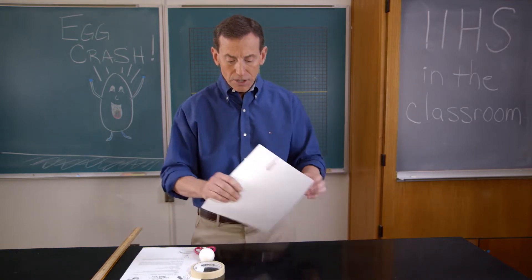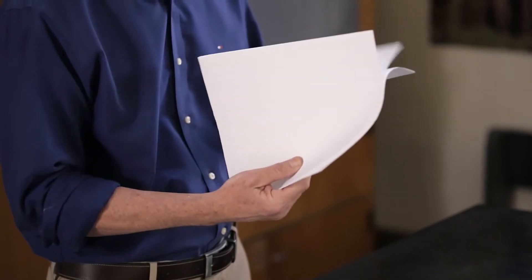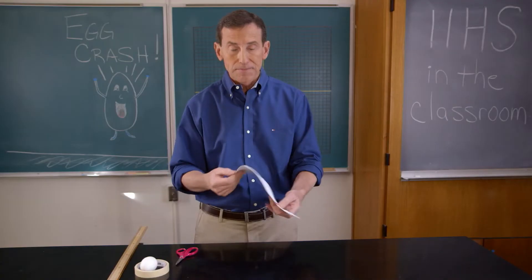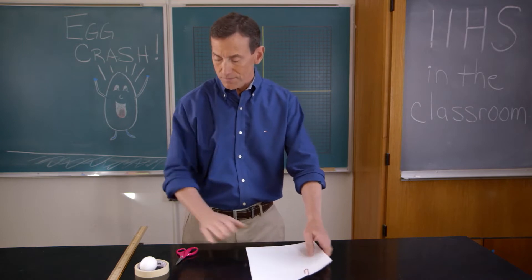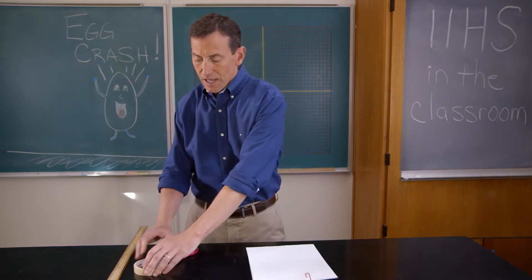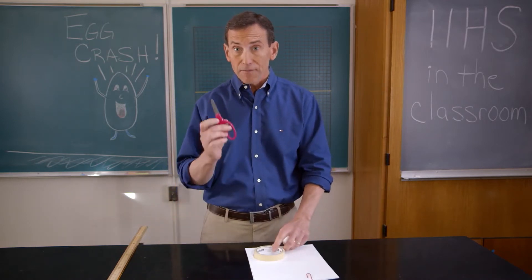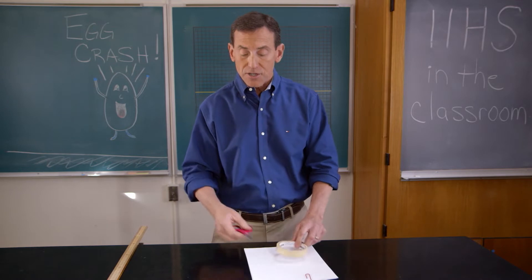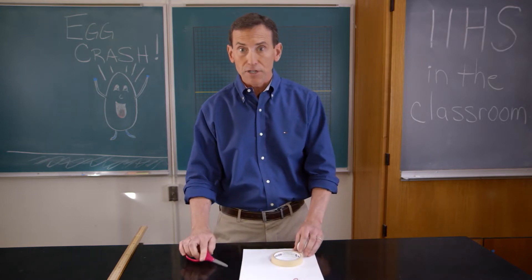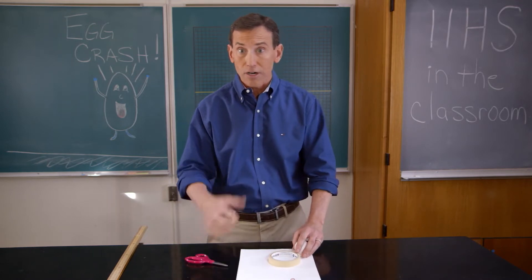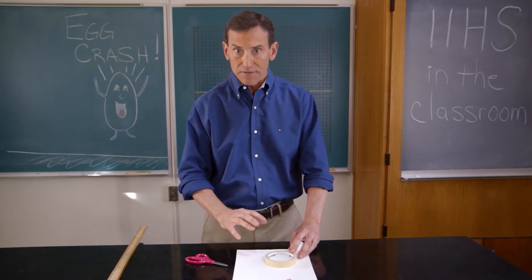To design that landing device, you're going to use no more than 10 sheets of paper — you can use fewer, you don't have to use them all — and a meter of masking tape. You also have a pair of scissors, so feel free to cut up the paper any way you'd like: fold it, crumple it, origami, whatever you want to do to design your collision safety device.